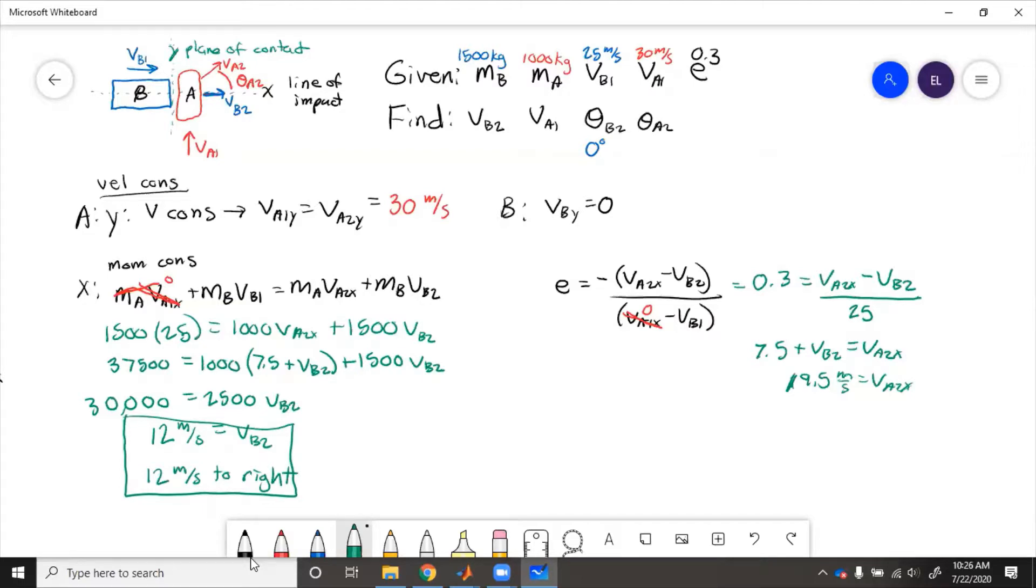But this is just the X, and we have to include the Y. So to get total, we need the magnitude. VA2 equals square root of VA2X squared plus VA2Y squared. So that equals square root of 30 squared plus 19.5 squared. 35.8 meters per second equals VA2, but we need to find the angle.